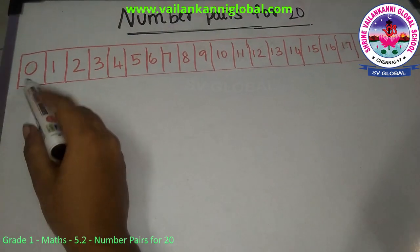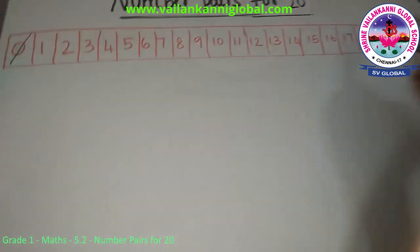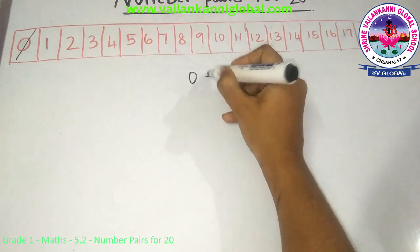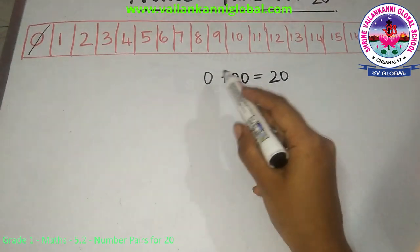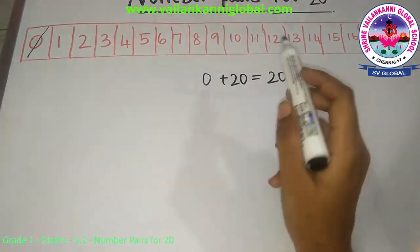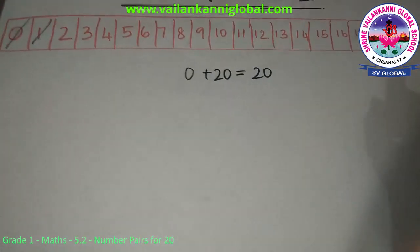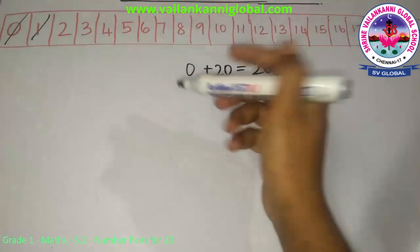We'll take the last number, 0 plus 20, so 0 plus 20 gives me 20. I've told you already, if you add with 0 you will get the same number. Next one, 1 plus 19, so 1 plus 19 also gives me 20.